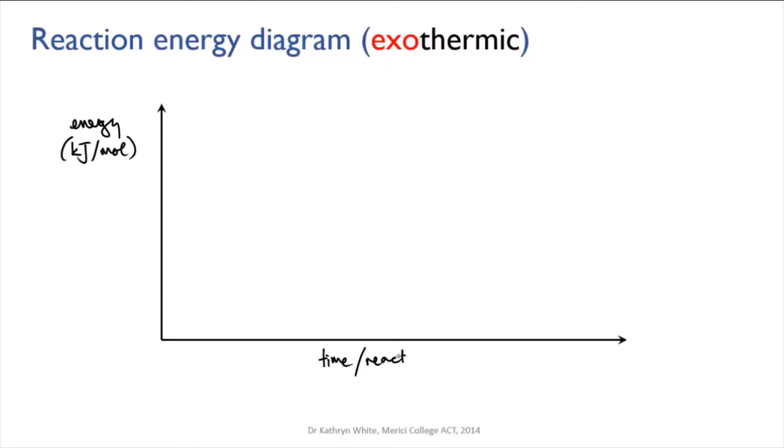So our x-axis is time. This is sometimes called the reaction coordinate. Really all it needs to represent is that this is the beginning of the reaction and this is the reaction proceeding and this is the end of the reaction.